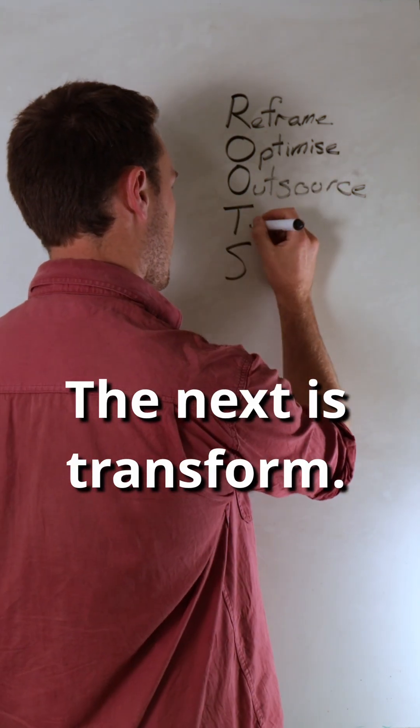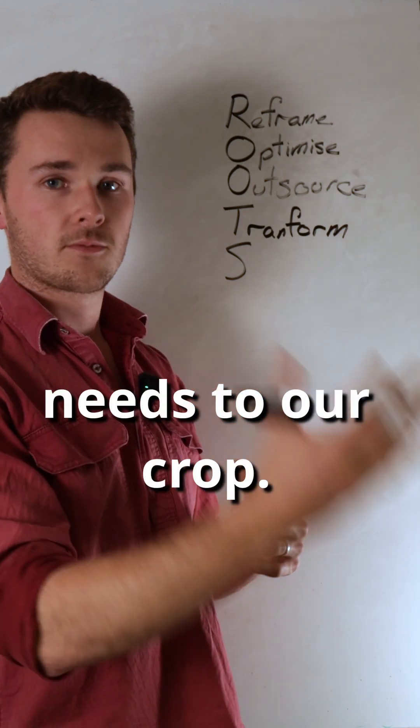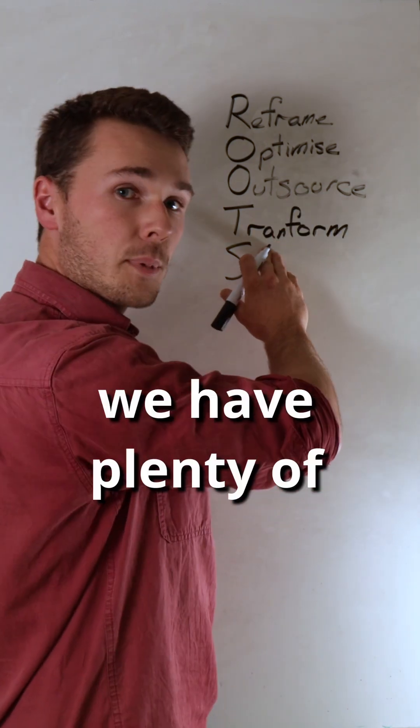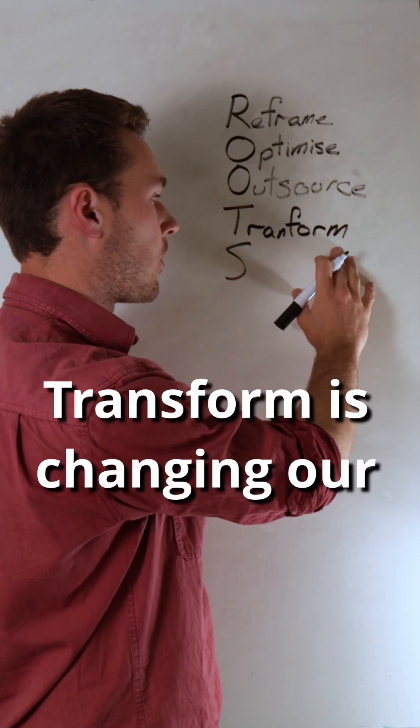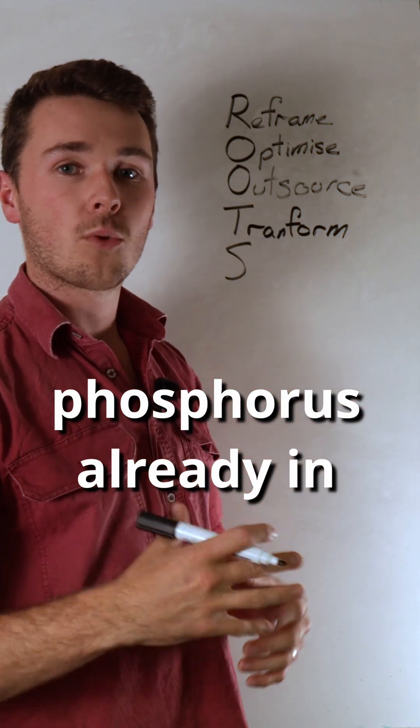The next component is Transform. This is where we start to change our system so that the system itself supplies the needs of our crop. For example, keeping with phosphorus - we have plenty in our soil. Transform is changing our system to use the phosphorus already in our soil.